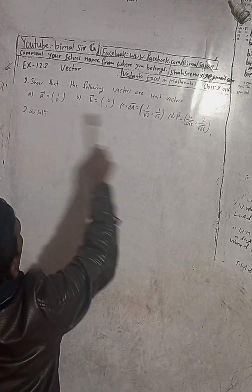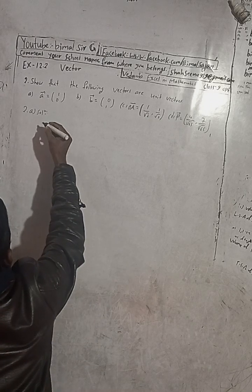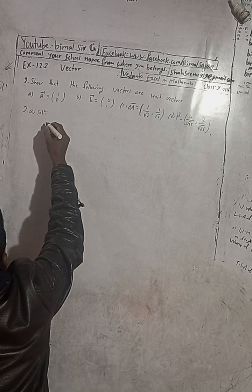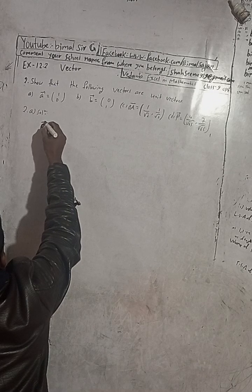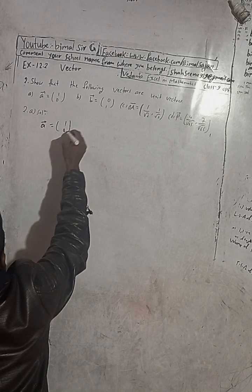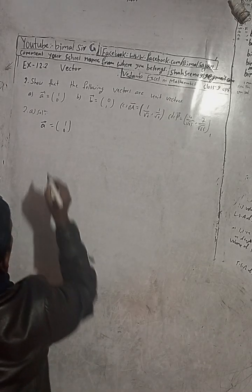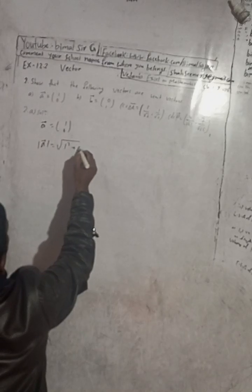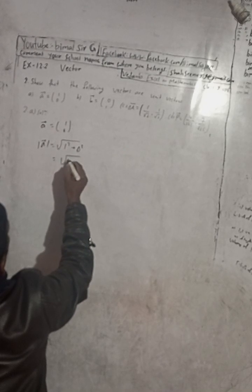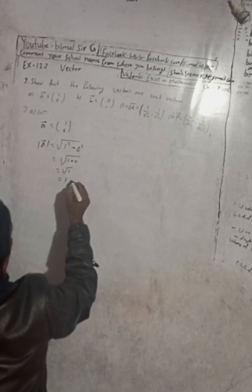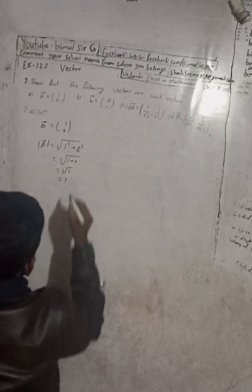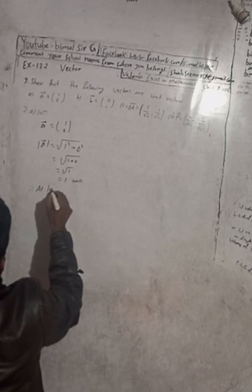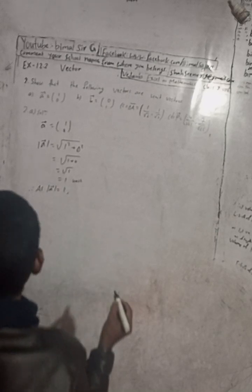Here we have the following vectors, and we need to prove that these vectors are unit vectors. For part A, the vector is given as (1, 0). To show a vector is a unit vector, you need to find the modulus. So modulus of vector A is equal to root under 1 squared plus 0 squared, which equals root of 1 plus 0, which is root 1, equal to 1 unit.